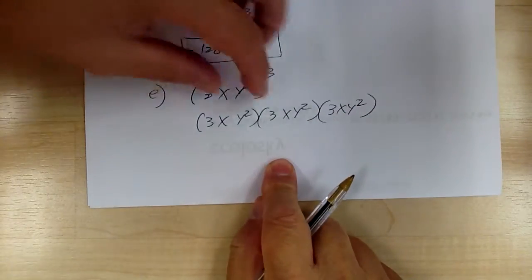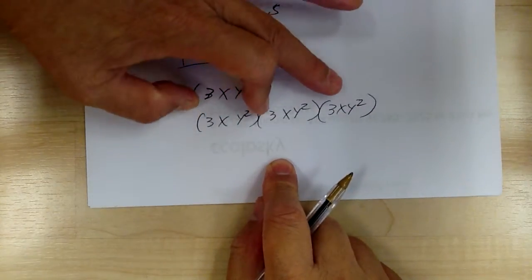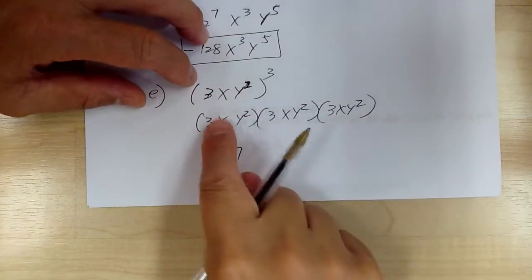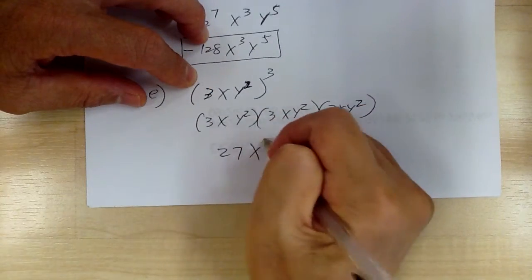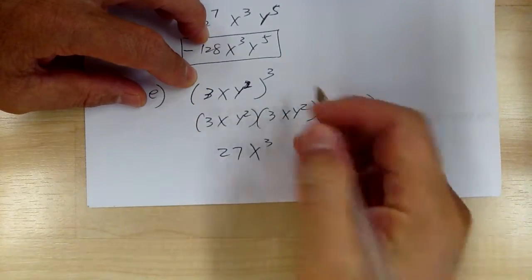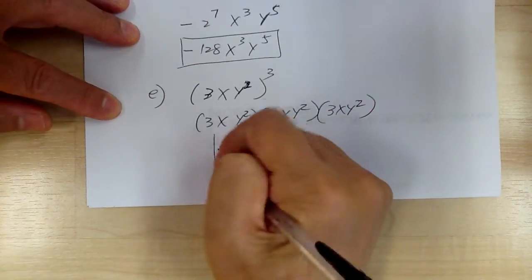So 3 times, then after you multiply, 3 times 3 is 9 times 3 is 27. x times x times x is x to the 3. y squared, y squared, y squared, give you y to the 6, and that's it.